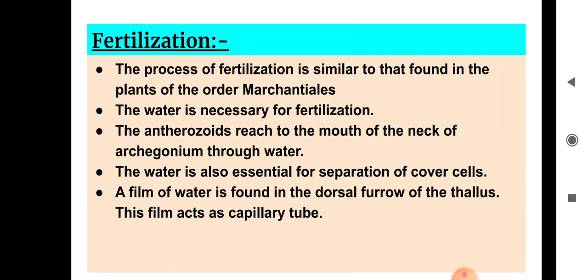Regarding fertilization: when antheridia mature, antherozoids are released. When the female archegonium matures, the cover cells dissolve, then the antherozoids enter and fertilization takes place. The process of fertilization is almost similar to that found in plants of the order Marchantiales.